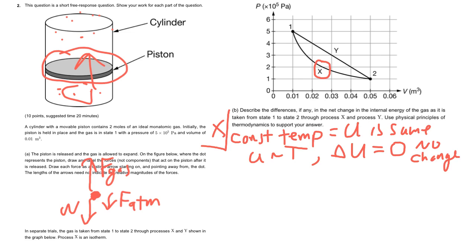Now process Y is an interesting question because it does end up at the same final temperature. If at point one and point two we just said that's the same temperature all along X, that means that point one and two are the same temperature, which means Y ends up at the same temperature.